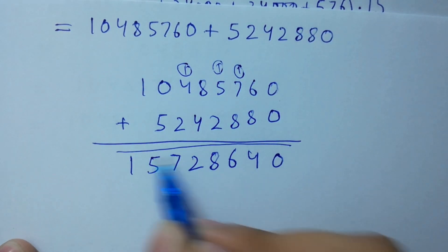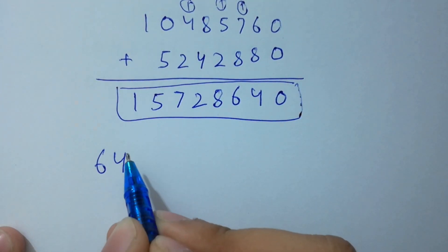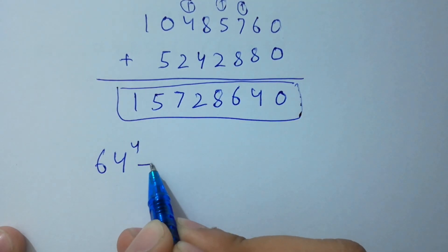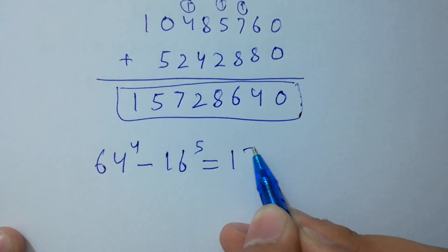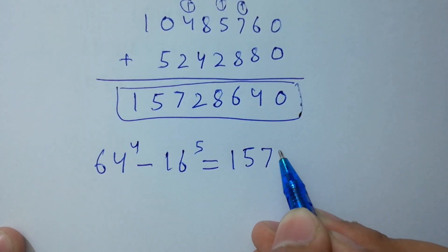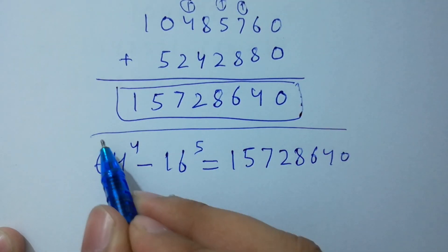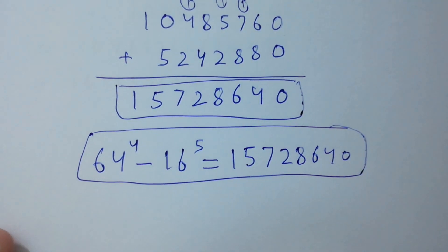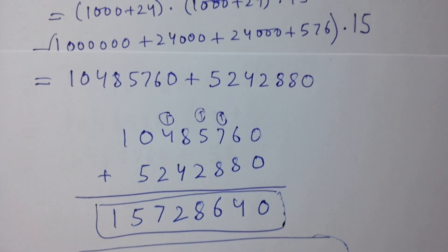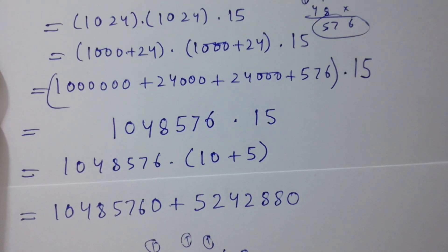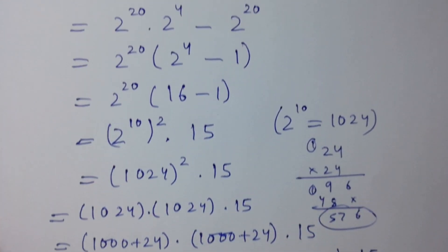So 64 to the power 4 minus 16 to the power 5 equals 15,728,640, which is our final answer. Thanks for watching this video. Please subscribe to this channel to get notifications of my new videos. Bye!